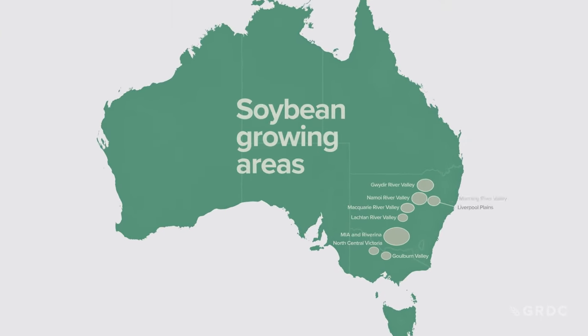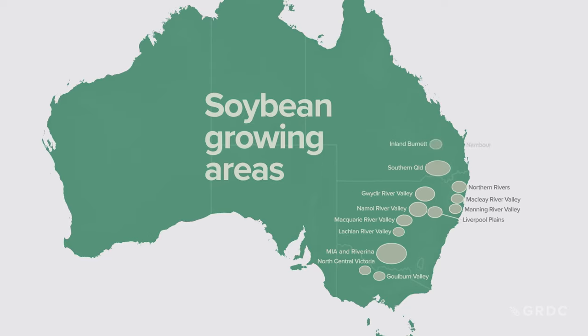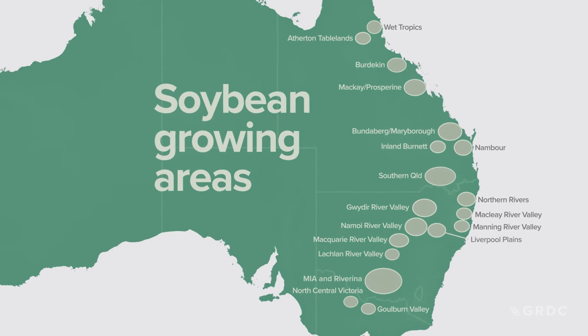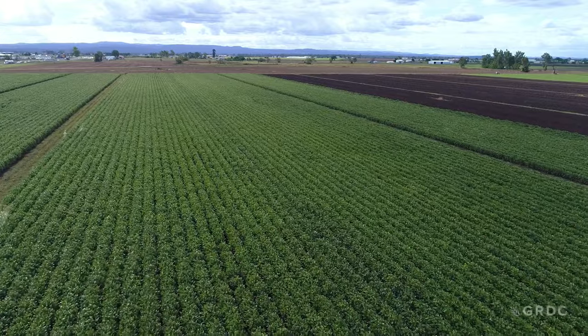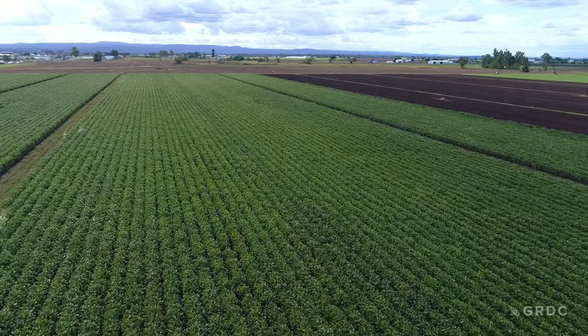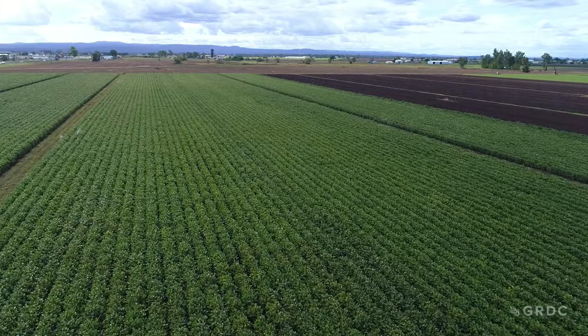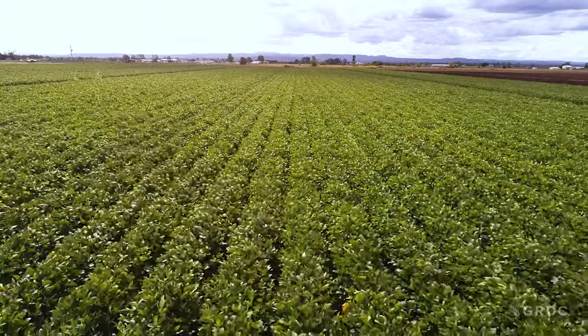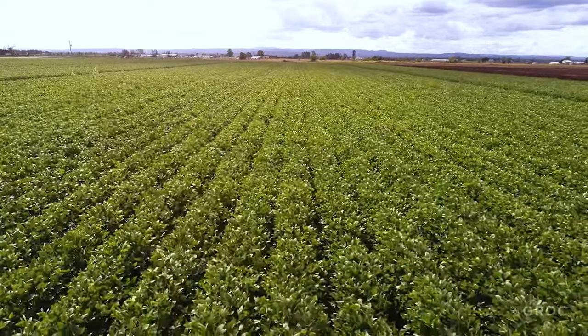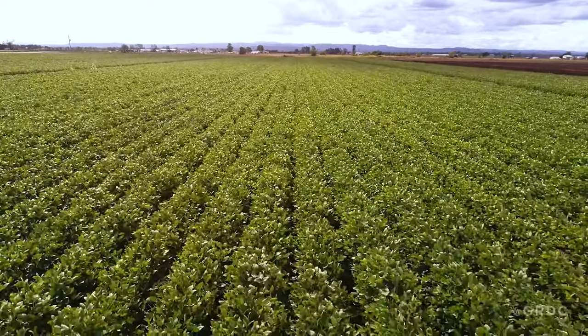Soybeans in Australia grow from the tropics all the way around through into Victoria. The main production areas are concentrated in the southeast corner of Queensland, where the major manufacturers and processors are situated. There is still plenty of demand in the marketplace in Australia — we're still not producing enough soybeans to meet all the market demand.